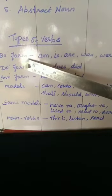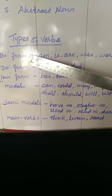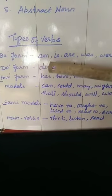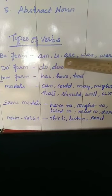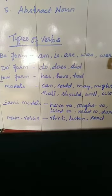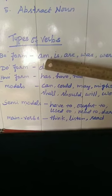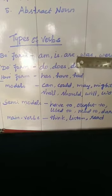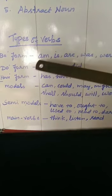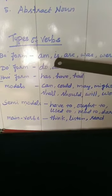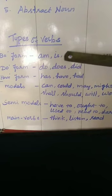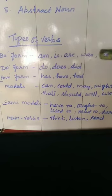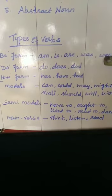Let us see the be form verbs. We have five be form verbs: am, is, are, was, were. Am, is, and are are used in present tense, whereas was and were are used in past tense. So there are five be form verbs — the first three are used in present tense and the last two in past tense.